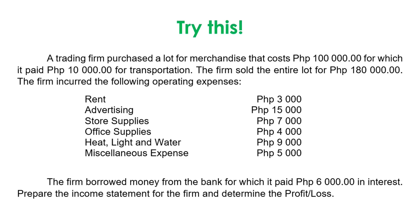Why don't you try this? You are given a problem: a trading firm purchased a lot of merchandise that cost 100,000 pesos, for which it paid 10,000 for transportation. The firm sold the entire lot for 180,000 pesos. The firm incurred the following operating expenses: rent, advertising, store supplies, office supplies, heat, light and water, and miscellaneous expense. The firm also borrowed money from the bank, which it paid 6,000 in interest. You are to prepare an income statement for the firm and determine if it is a profit or a loss. You can pause this video and try to solve on your own, write it on paper, and then play it again afterwards. We will try to see if your answer is correct.